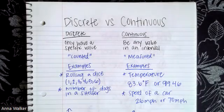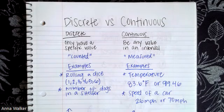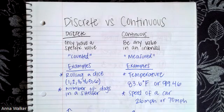Good afternoon, students. So in this video, we are going to talk about two different types of data. As we get into this next unit and we go over all the different ways that we can model data through dot plots and box plots and understand how to calculate the average of things, we need to understand that there are two different kinds of data that we're going to be looking at.